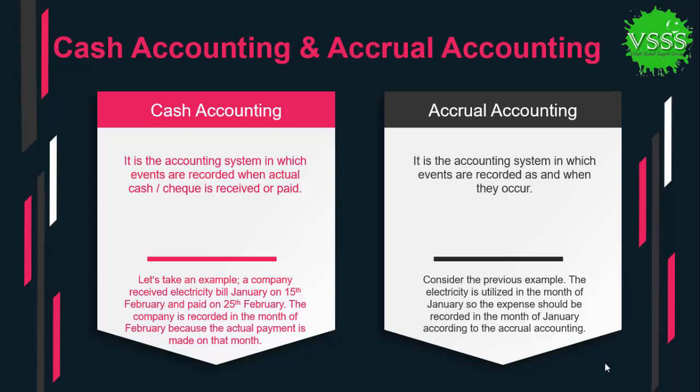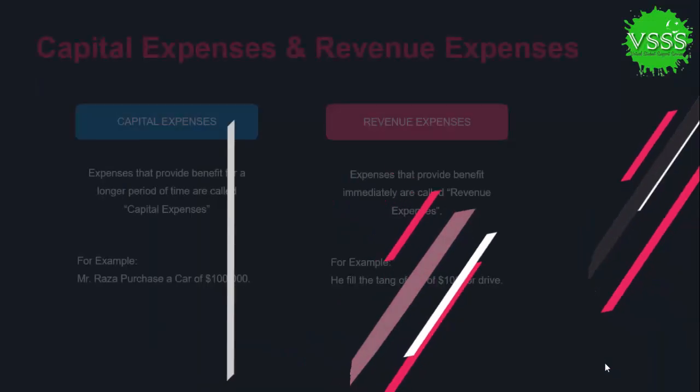In cash accounting, when events are actually received or paid in terms of cash, the transaction is recorded. In accrual accounting, transactions are recorded when they occur, regardless of when cash is exchanged. This is the core difference between cash accounting and accrual accounting.